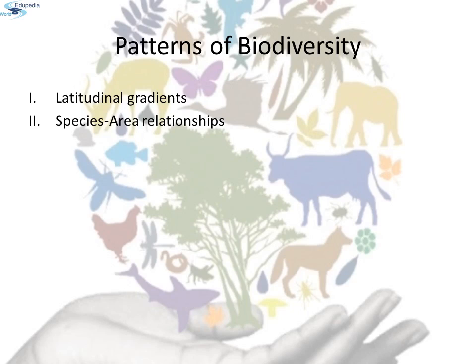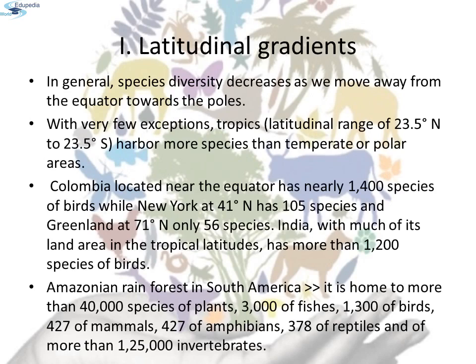Patterns of Biodiversity: latitudinal gradient and species-area relationships are two key patterns of biodiversity. The diversity of plants and animals is not uniform throughout the world but shows a rather uneven distribution. For many groups of animals or plants, there are interesting patterns in diversity, the most well-known being the latitudinal gradient in diversity.